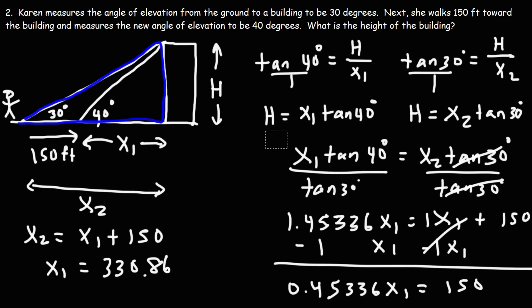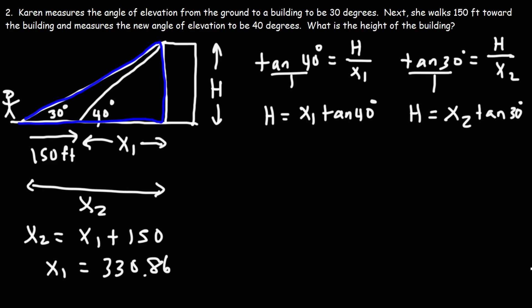So now that we know the value of x1, we can calculate the height using this formula. So it's going to be x1, which is 330.86 times tangent of 40. So you should get 277.6 feet. So that is the height of the building.